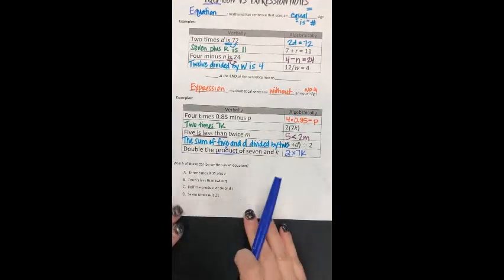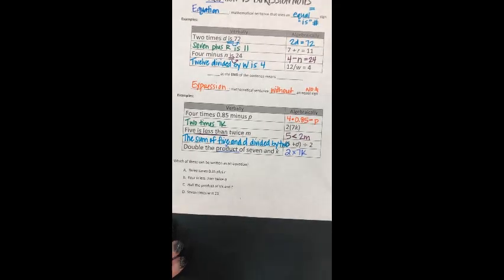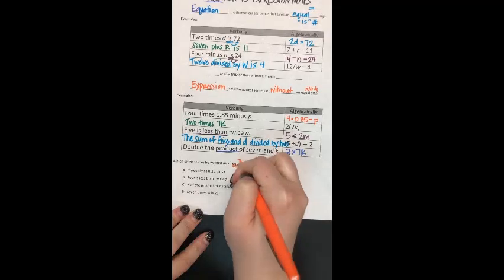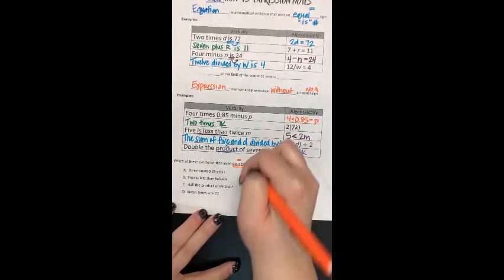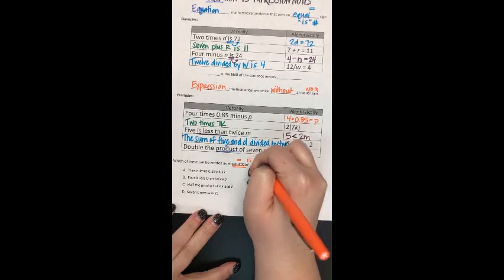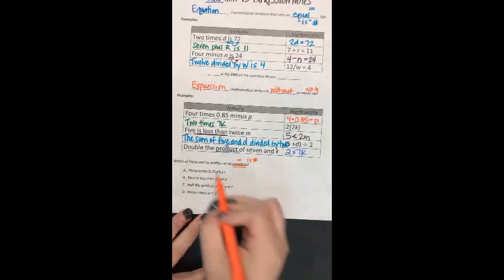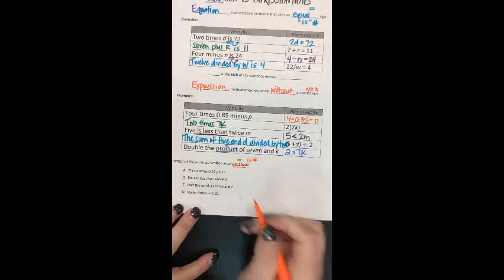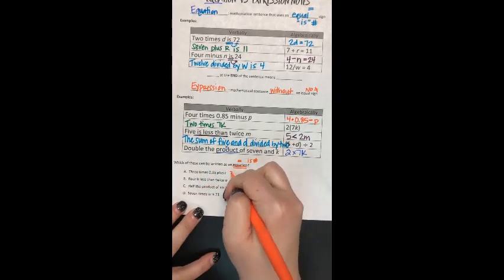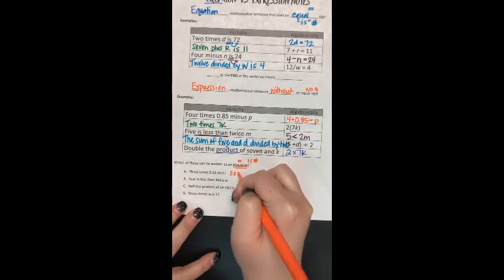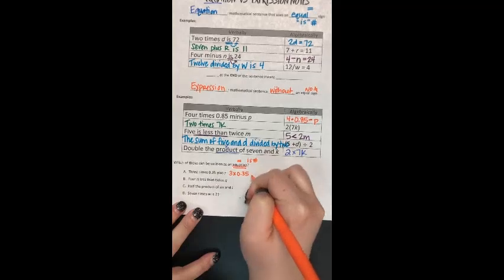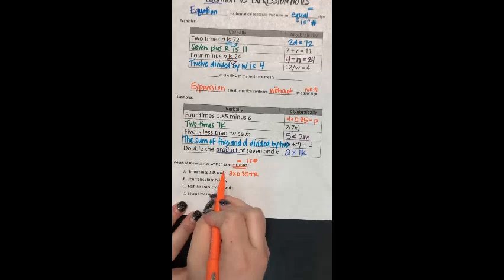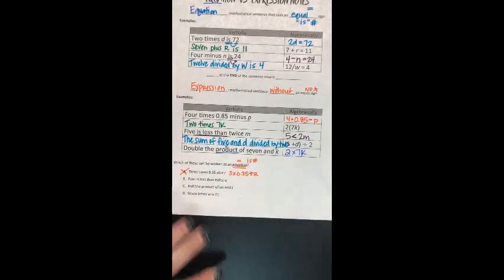So here's how we might see it on STAR. It says, which of these can be written as an equation? And we know that equations have equal signs. It says 3 times 0.35 plus r. So 3 times 0.35 plus r. We didn't have an equal sign, we didn't have our keyword is. So that is an expression.